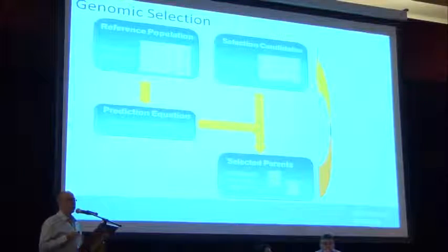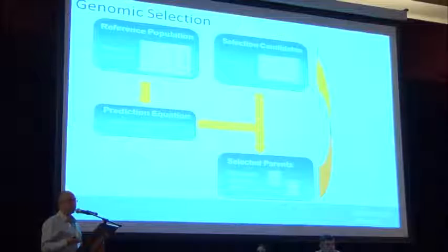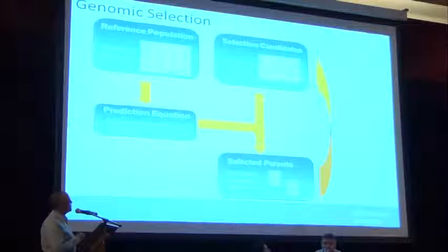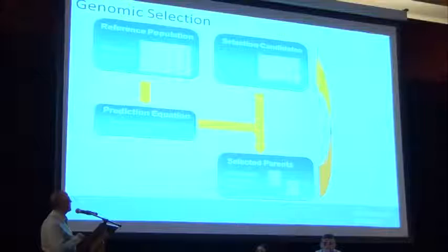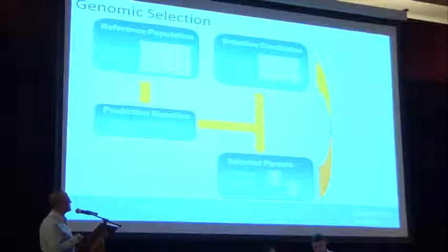Once you have that prediction equation, all you need to do is genotype a single plant or a collection of plants in a pool. You can then predict their phenotypic performance based on the marker effects and their genotypes. Once you've predicted their GBVs, as the previous speaker discussed, you can select individuals and take them forward into the next breeding cycle as parents to make genetic progress.